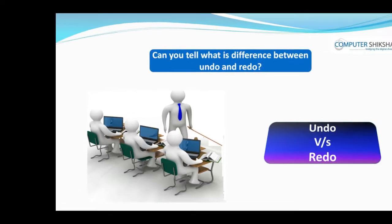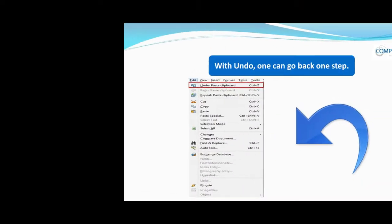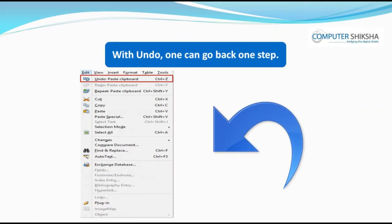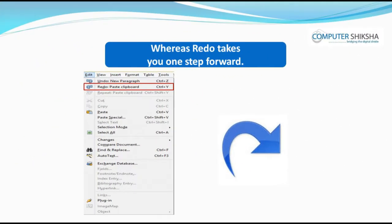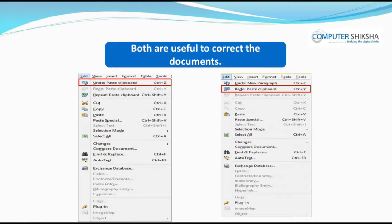Can you tell what is the difference between undo and redo? Undo is used to correct mistakes in the document. With undo, one can go back one step, whereas redo takes you one step forward. Both are useful to correct documents.